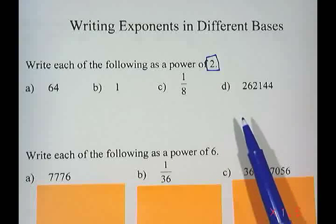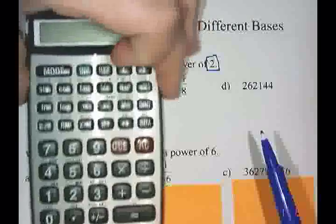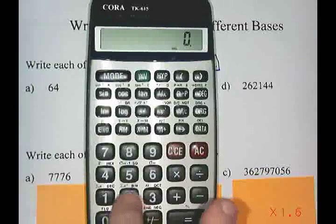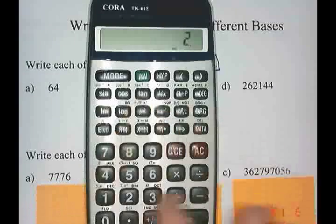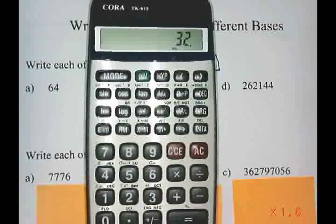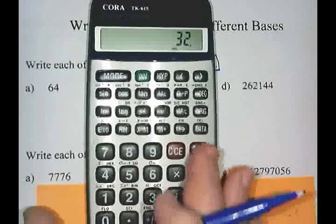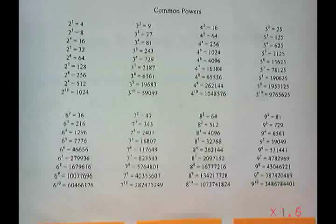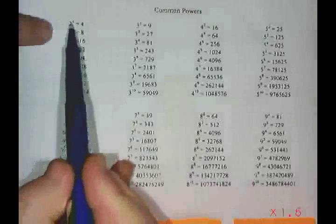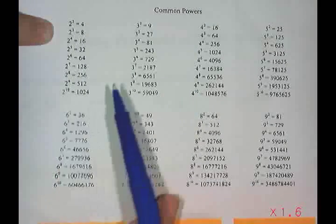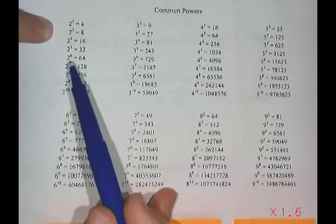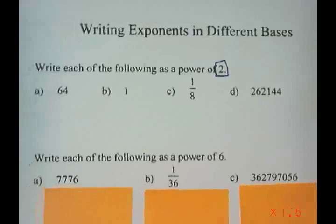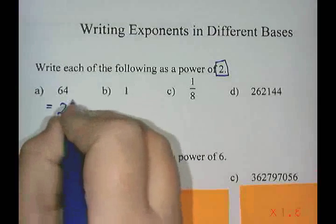There are two ways to do this. Number one is to use your calculator and try the guess and check method — try two to the power of five for 64; if it's too low, try higher; if too high, try lower. My preferred method is to use the power sheet. Looking at powers of two, I find that 64 is two to the power of six.